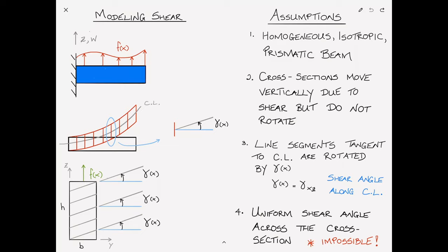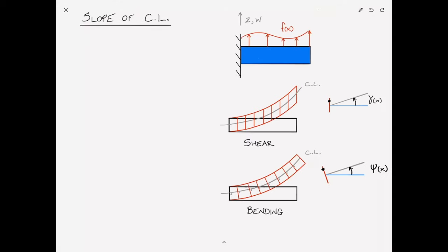Now that we have our assumptions, we can start writing some equations. The first thing to consider is the slope of the center line. Using the figure showing shear and bending deformation of the beam, we know that both the shearing and the bending affect the slope of the center line. The slope of the center line w,x is equal to γ(x) plus ψ(x). We'll call that equation one.